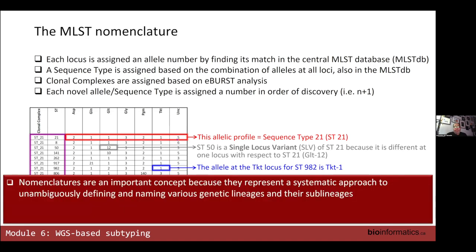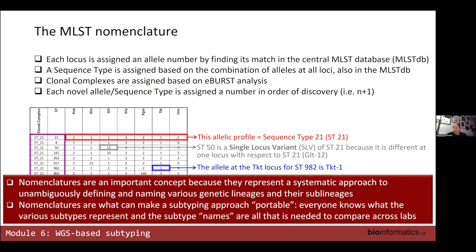This concept of nomenclature is important because it represents a systematic approach to naming genetic lineages and their sub-lineages with very specific names that everyone can agree on. It also makes the method portable: once we've established these rules and implemented them with a database that everyone can access, we are all talking the same language.